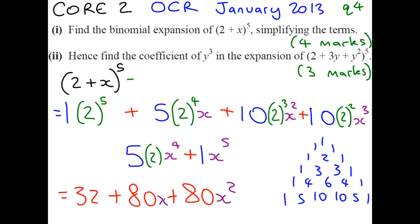Plus 10 times 2 squared, which is 40. So the next one is going to be 40 x cubed, plus 5 times 2, which is just 10, x to the power of 4, and finally, on its own, x to the power of 5. So that is your answer for the first part of the question, which gets you your first four marks.